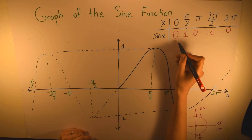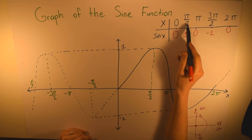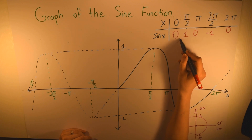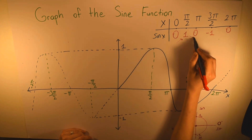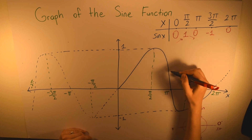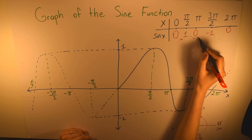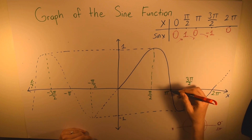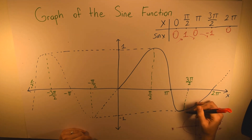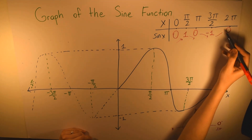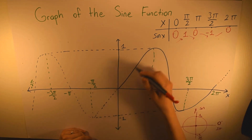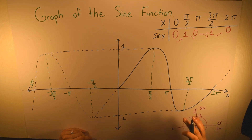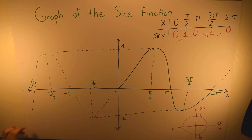From 0 to π/2, the sine function goes up from 0 to 1. Then from π/2 to π, it goes back down from 1 to 0. Then it continues down from 0 to minus 1 at 3π/2, and then goes back up from minus 1 to 0 at 2π. This curve repeats itself every 2π on the graph of the sine function.